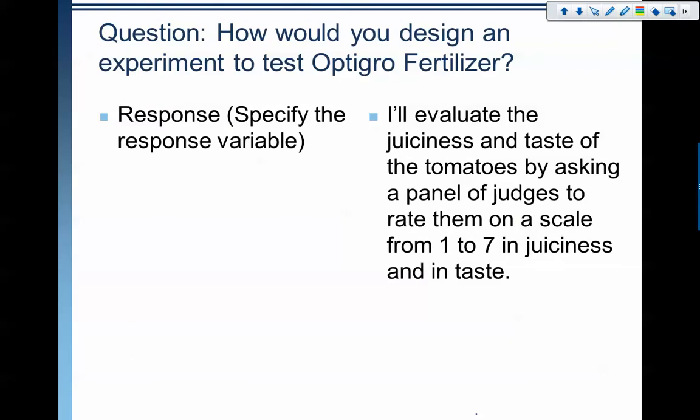My response variable — the thing that I'm measuring — is the juiciness and tastiness of the tomatoes. What we'll do is evaluate that by asking a panel of judges. We'll gather a panel of expert tomato people from the industry to tell us about the juiciness and tastiness of the tomatoes. We'll rate them from one to seven. That'll be my response variable — that is ultimately the thing that I'm measuring and trying to find.